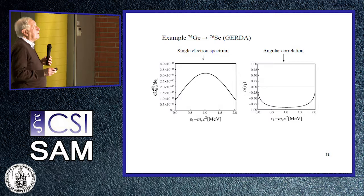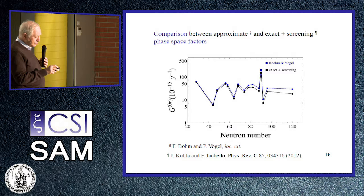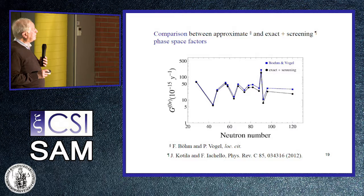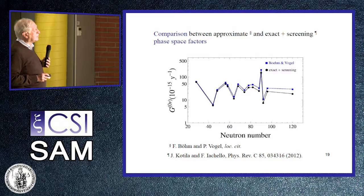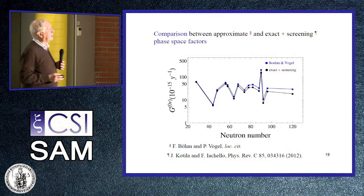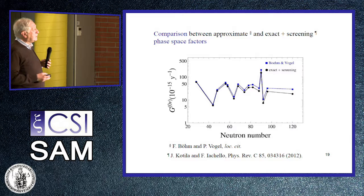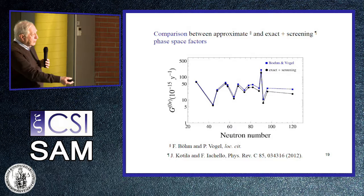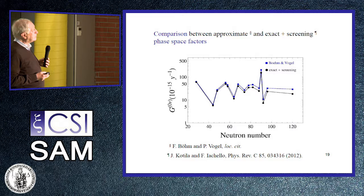There is also a comparison between approximate and exact screening phase-space factors on a logarithmic scale, and the correction is not negligible for heavy nuclei. All these effects go like Z-alpha. The Coulomb potential is of order Z-alpha, but the screening correction is of order Z-alpha squared — one order of alpha less, but still containing Z. Therefore, the larger the charge of the nucleus, the larger the correction. For uranium, the correction is already a factor of about two in the phase-space factor.